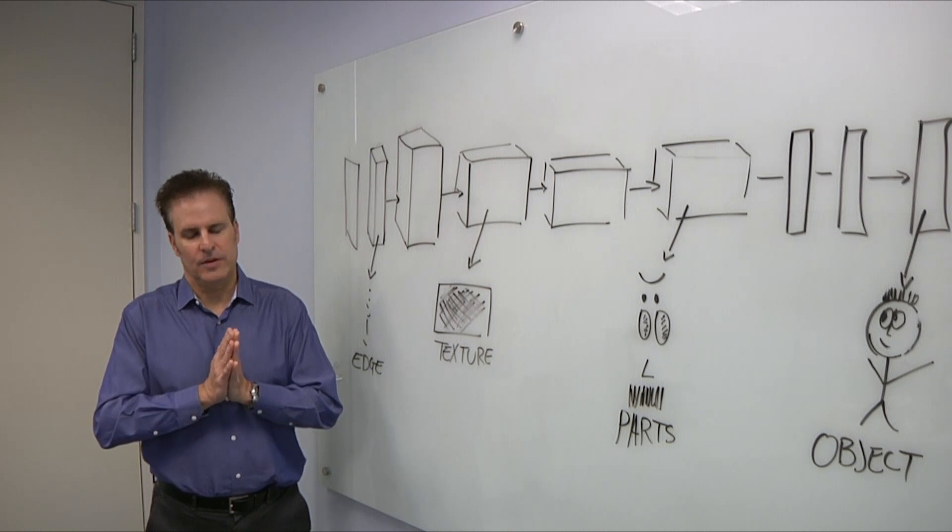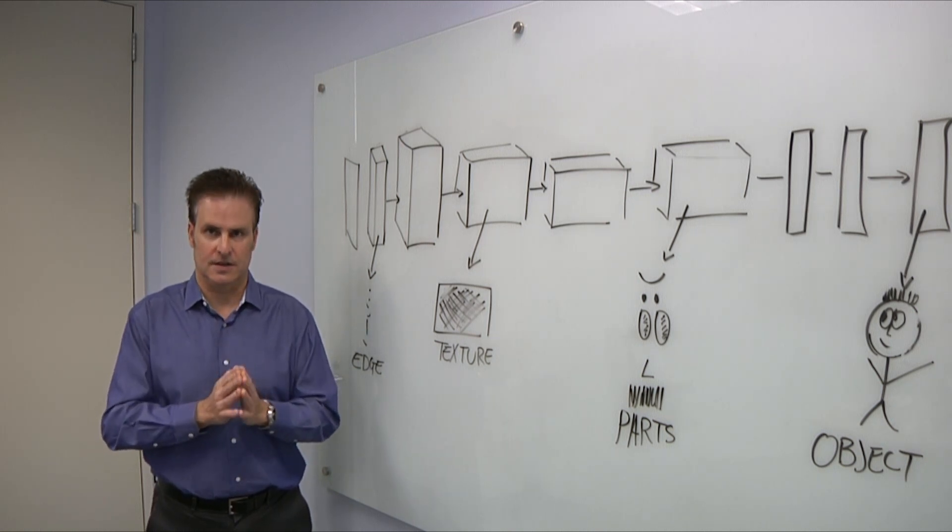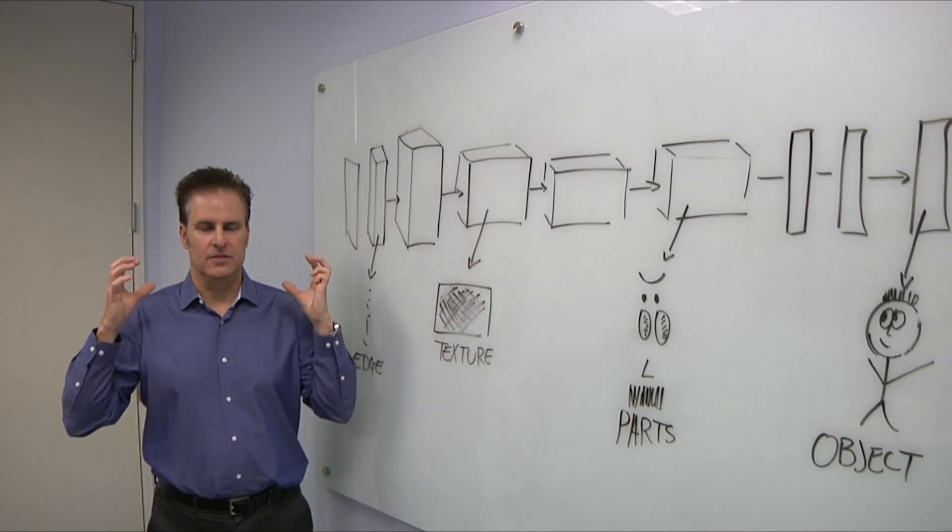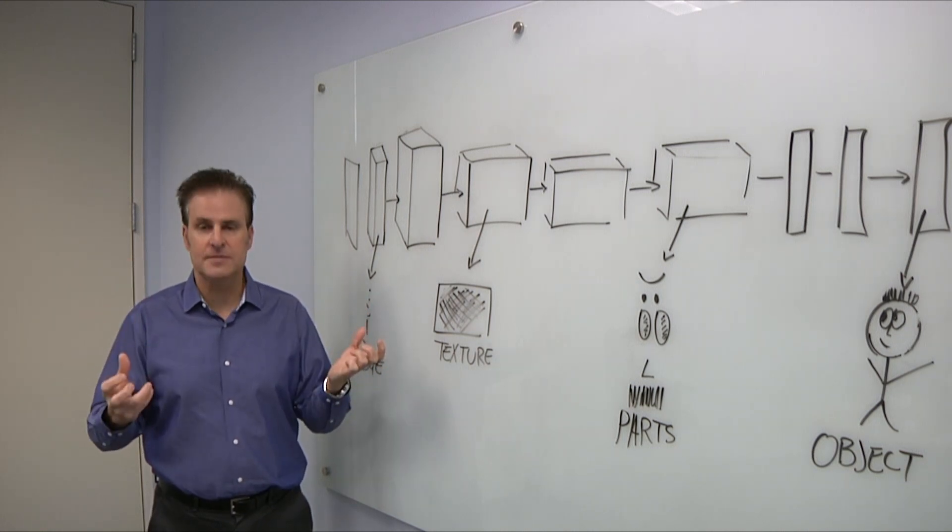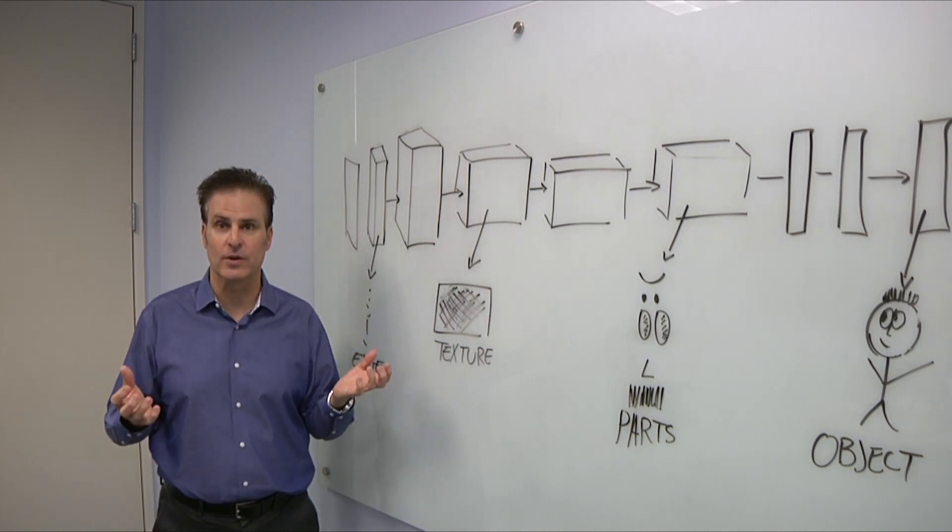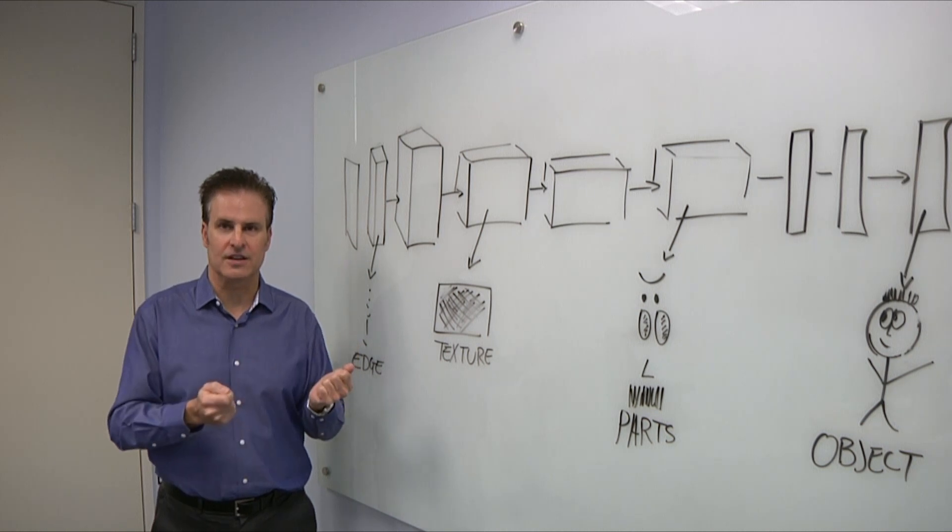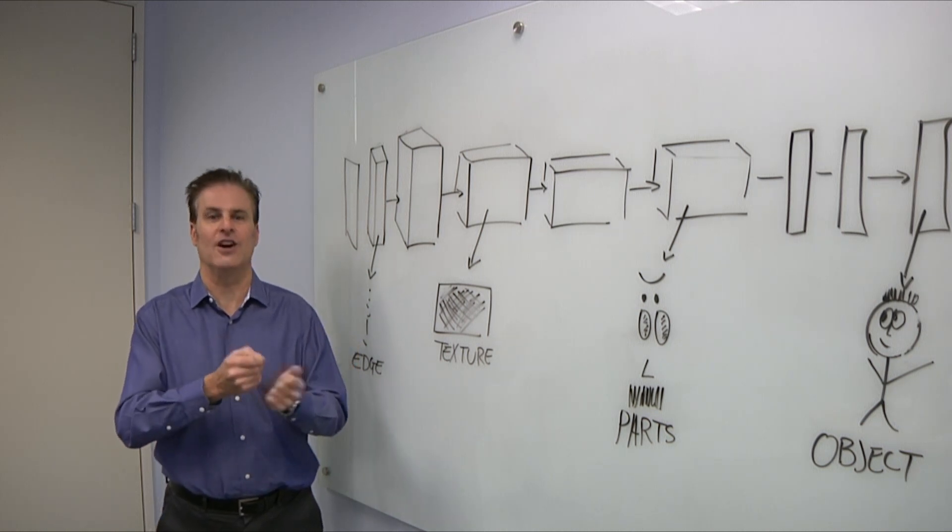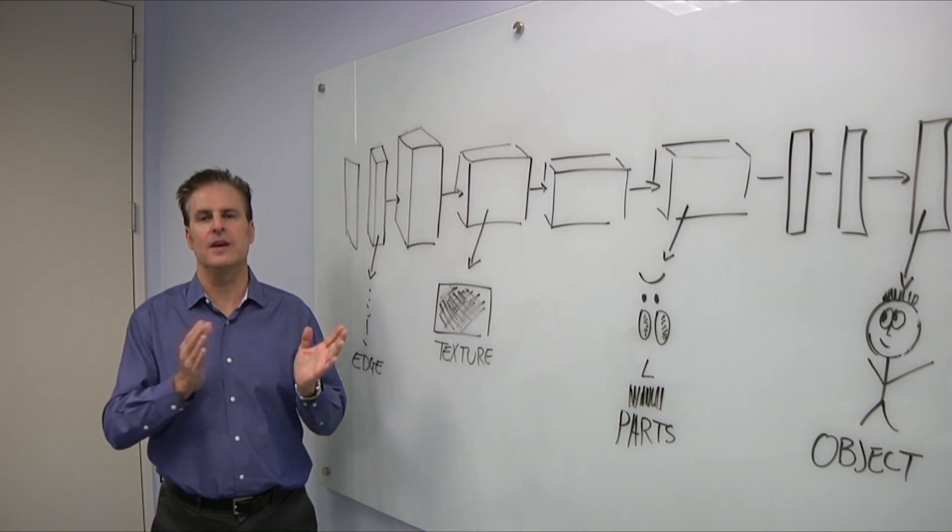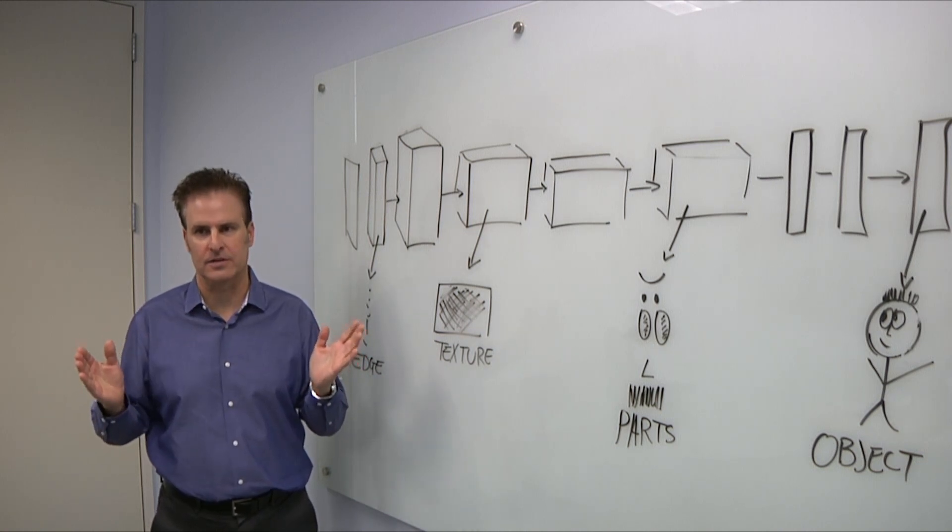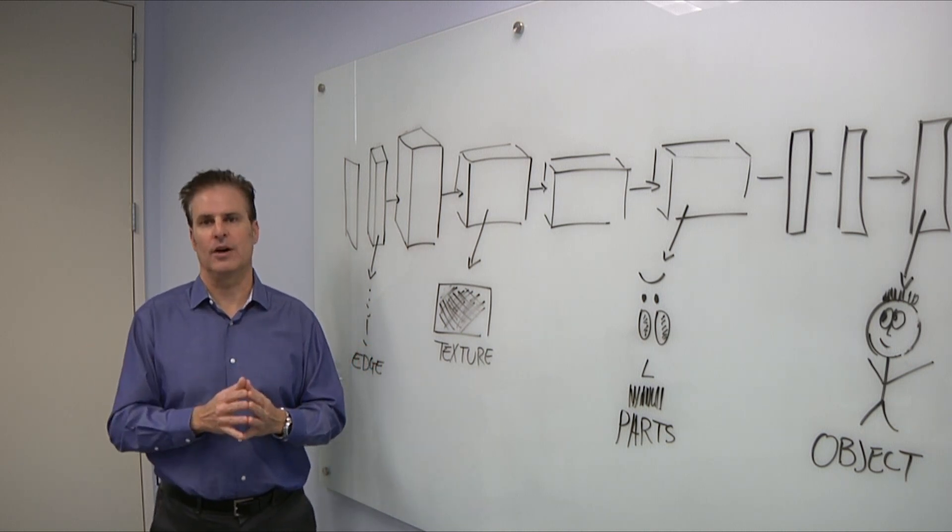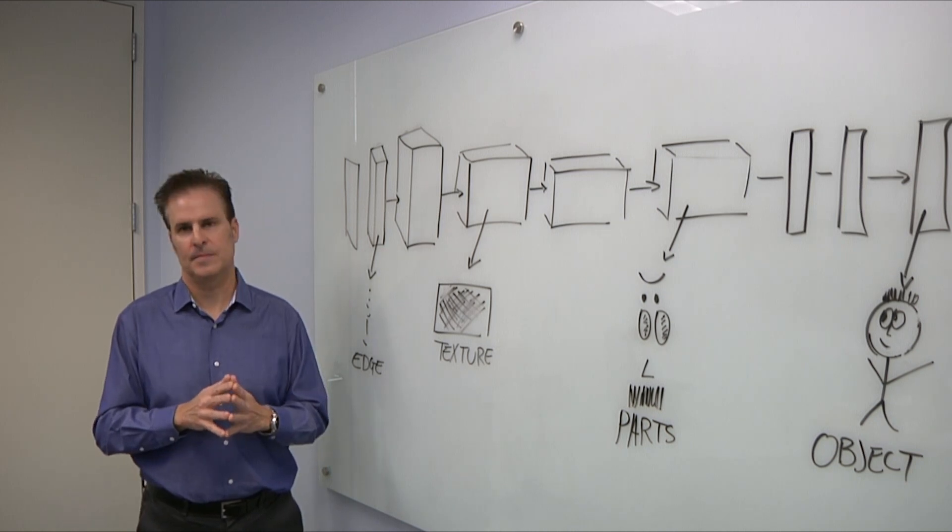This is a really important point about how to apply deep learning and neural network technology in general. There's types of architectures, for example, like convolutional neural networks that people are very familiar with. Once they understand convolutional neural networks, they want to try to solve all problems using that architecture. When in reality, there are many different types of neural network architectures and new ones being developed all the time that are right for different types of problems.